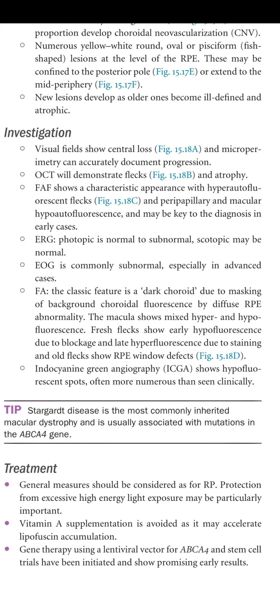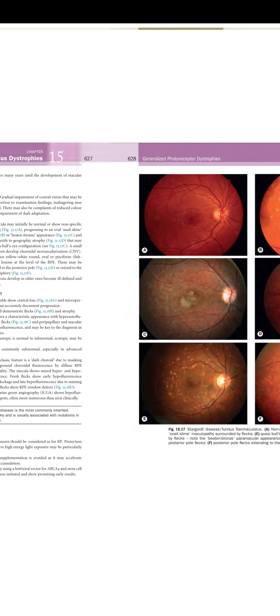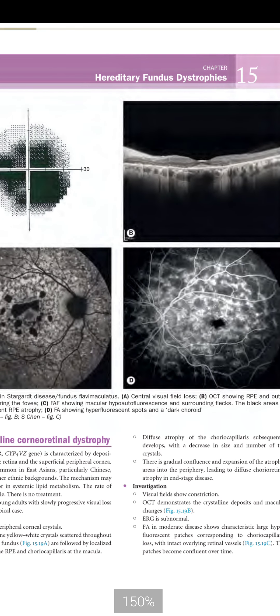Treatment: general measures should be considered as for retinitis pigmentosa. Protection from excessive high-energy light exposure may be particularly important. Vitamin A supplementation is avoided as it may accelerate lipofuscin accumulation. Gene therapy using a lentiviral vector for ABCA4 and stem cell trials have been initiated and show promising early results.